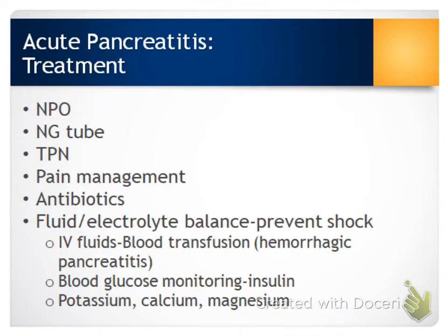Treatment for acute pancreatitis — at the top of the list — is treating pain and preventing shock. We're giving IV narcotic medication, fluids, and electrolytes, and making the patient NPO. Oftentimes, an NG tube is inserted as well. We make them NPO and insert the NG tube because we want the pancreas to rest — we don't want it excreting pancreatic enzymes needed for digestion.